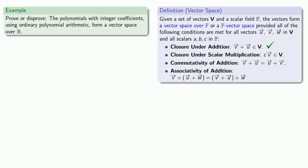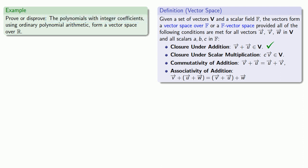The next thing to check is closure under scalar multiplication. If I take a scalar and multiply it by one of these vectors, do I get another one of these vectors? Our scalars come from the real numbers, and our vectors are polynomials with integer coefficients. If I multiply a polynomial with integer coefficients by a real number, I won't necessarily get a polynomial with integer coefficients. So we fail closure under scalar multiplication, and we do not have a vector space.